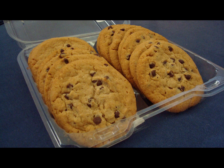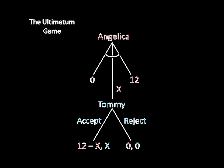Each child's sole desire here is to maximize their cookie consumption. So the game starts with Angelica offering some number between 0 and 12. Tommy can then either accept or reject that offer.